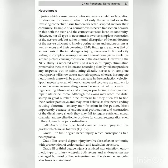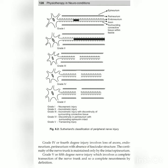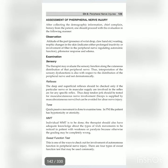Grade 1 (first degree) is neuropraxia. Grade 2 involves loss of axon continuity with preservation of endoneurium and fascicular structure. Grade 3 is a mixed axonotmetic-neurotmetic type of injury. Grade 4 involves loss of axons, endoneurium, and perineurium with absence of fascicular structure. Grade 5 is complete neurotmesis.